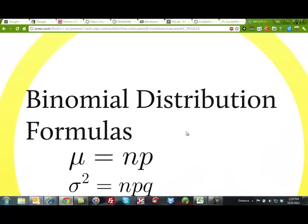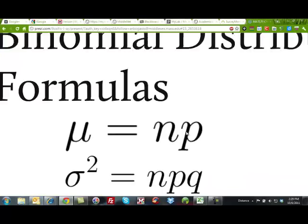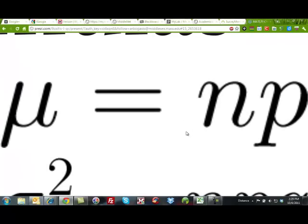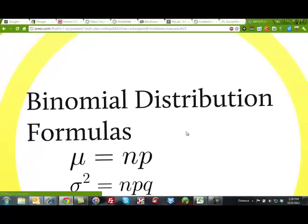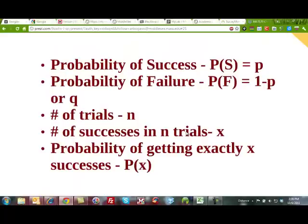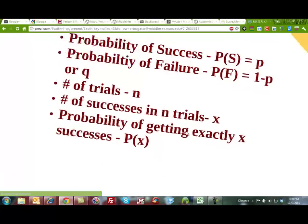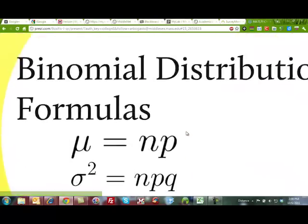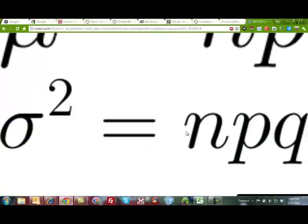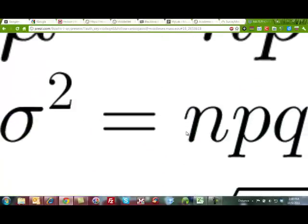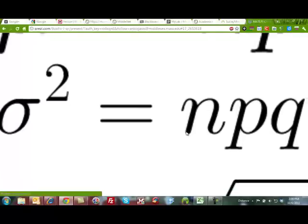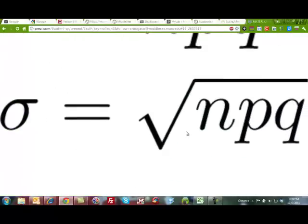The nice thing about the binomial distribution is that the formulas are really easy. Our mean is n times p, the number of trials times the probability of success. The variance is the number of trials times the probability of success times the probability of failure. Our standard deviation is the square root of n times p times q. Those are very nice, simple formulas to use.